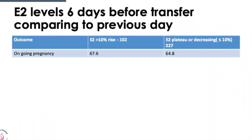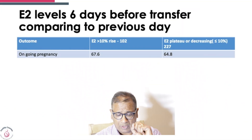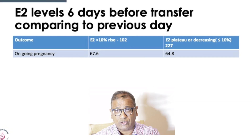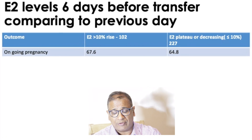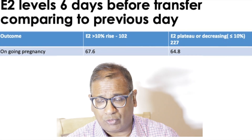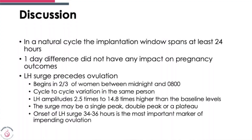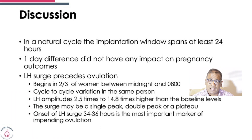They also looked at estrogen levels six days before transfer and the previous day — two estrogen levels done — and then cyclogest was started. A rise in estrogen was observed. Live birth and ongoing pregnancy rates were 67%, and whether the estrogen level went up or down, pregnancy rates were very much 64.8%. So there was no difference during embryo transfer. In a natural cycle, the implantation window seems to span at least 24 hours, and a one-day increase in embryo transfer timing does not appear to change pregnancy rates.